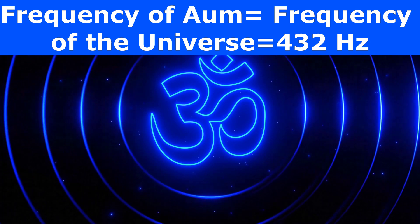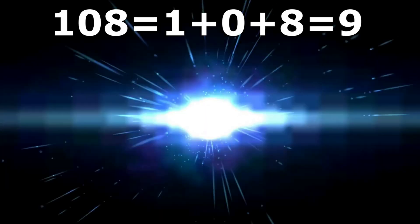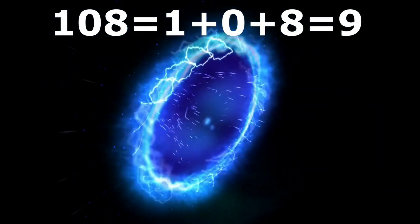On observing the shape of the Om symbol, it becomes apparent that it combines the numbers 3, 6 and 9, with the number nine positioned at the top of 3 and 6. Not just this, in Hinduism the sacred number 108 also reduces to number 9.